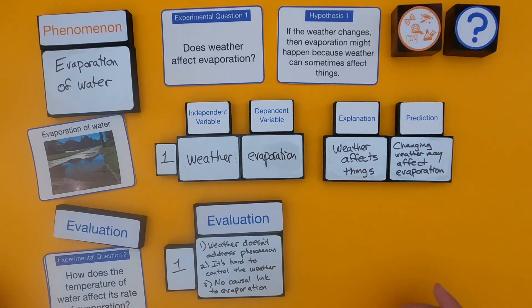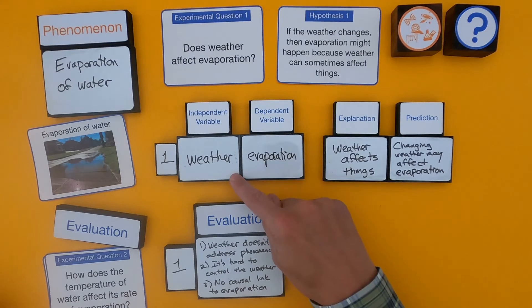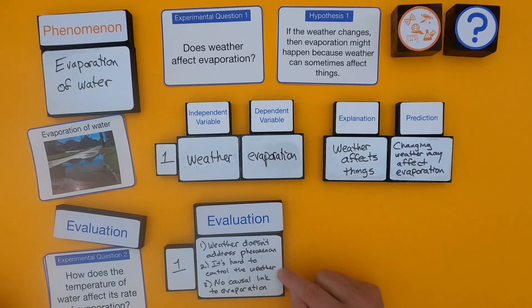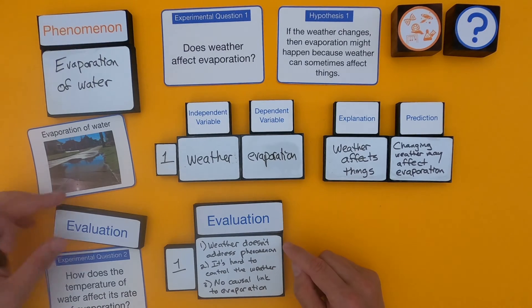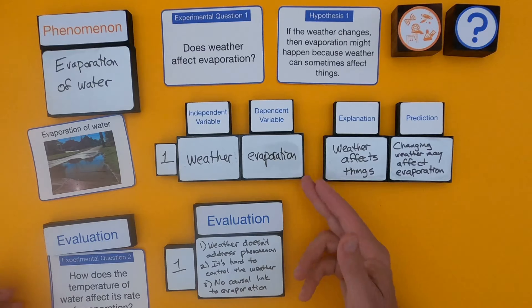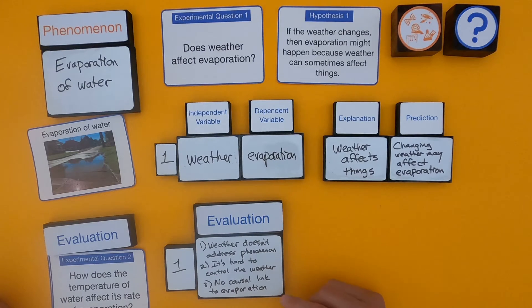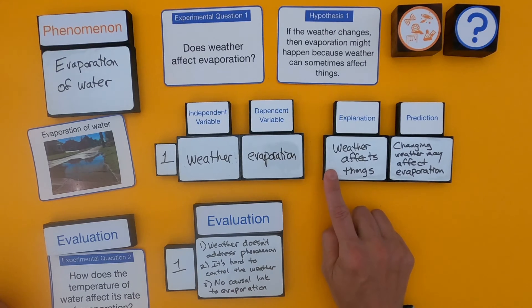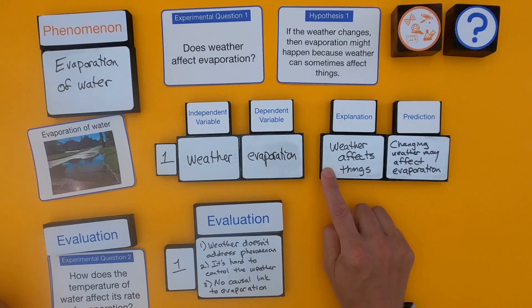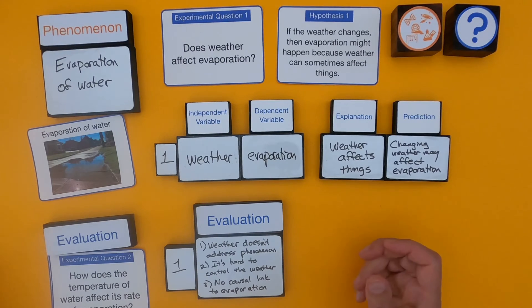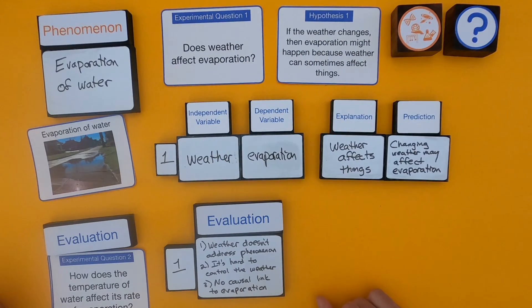As I evaluate student one's question, number one, this idea of weather would be hard to control, and it doesn't really address the phenomenon. That's feedback I would give to the student. The next thing I'm looking at is in the explanation — there's no real causal link. The explanation that weather can affect things is a very weak causal link. So I would say it's not a great experimental question, and it's not a great hypothesis.